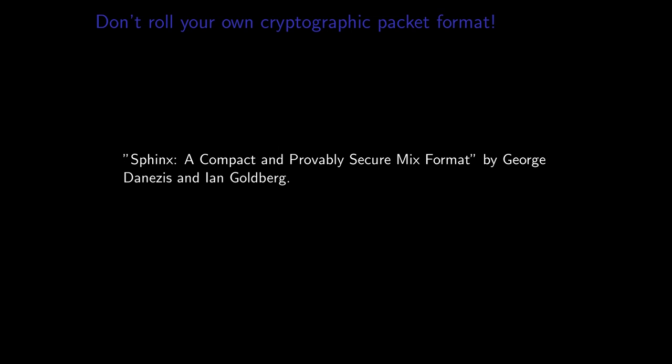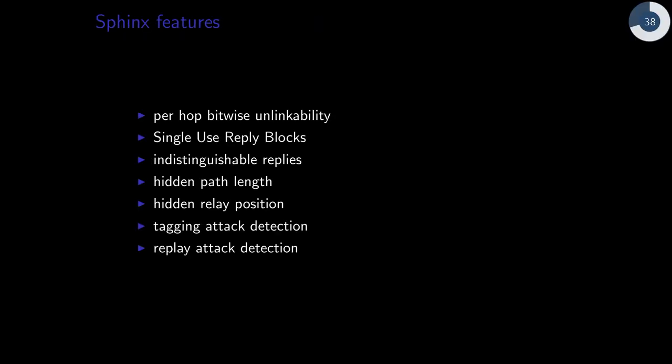The Sphinx packet format is cool. This paper, you should read it if you're interested in learning more detail about the cryptographic packet format. This is the nested encrypted packet format that decryption mixnets should use. It's what cats and posts uses. Sphinx has a lot of cool properties, a lot of cool features. There's per-hop bitwise unlinkability, single-use reply blocks for anonymous replies. Replies are indistinguishable from normal forward messages, hidden path length, hidden relay position, tagging attack detection, and replay attack detection. It's a bit too much detail for me to go over all these features in this talk here. But I might briefly mention them if they come up again.